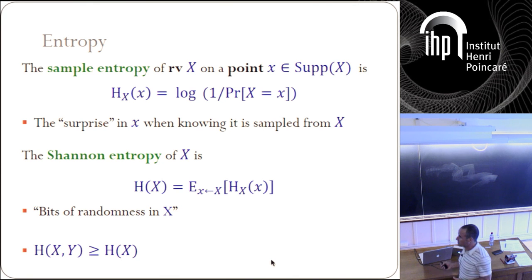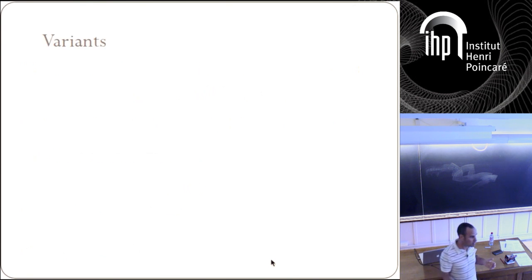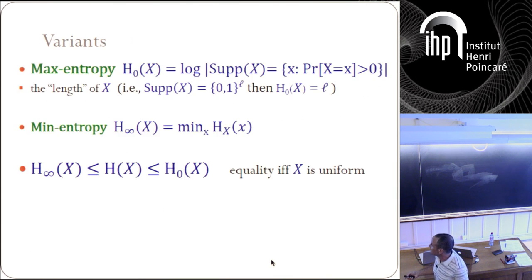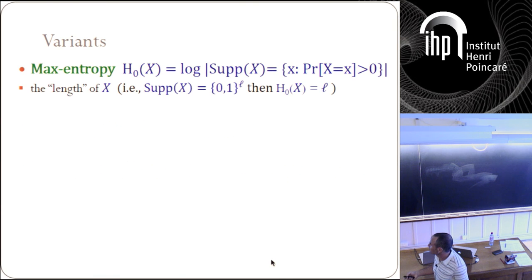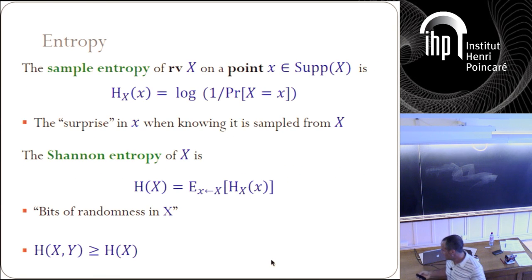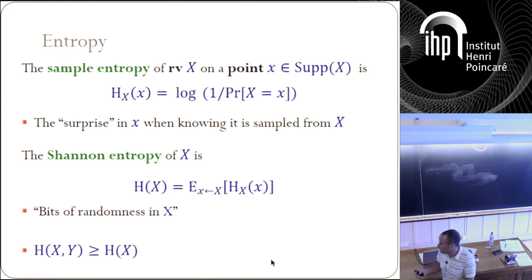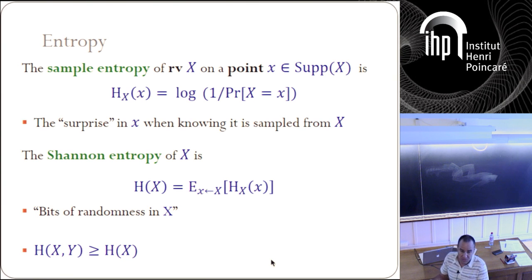The first one I'm going to state is that if you add a random variable, it only increases the entropy — it cannot decrease the entropy. That is, if you consider the entropy of the jointly distributed random variable X and Y, think about this as one random variable — it only has more entropy, not less entropy, than the entropy of X by itself.